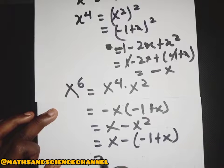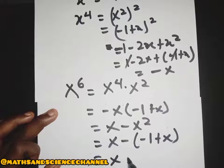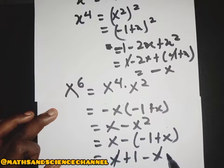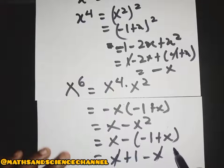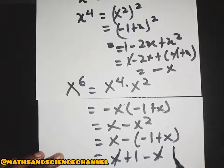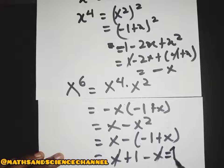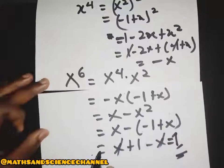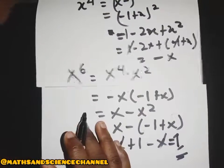When we simplify — we have x, and then we substitute s squared as negative 1 plus x — so we get x plus 1 minus x. Those cancel, and we have the answer equal to 1. So s to the power of 6 equals 1.